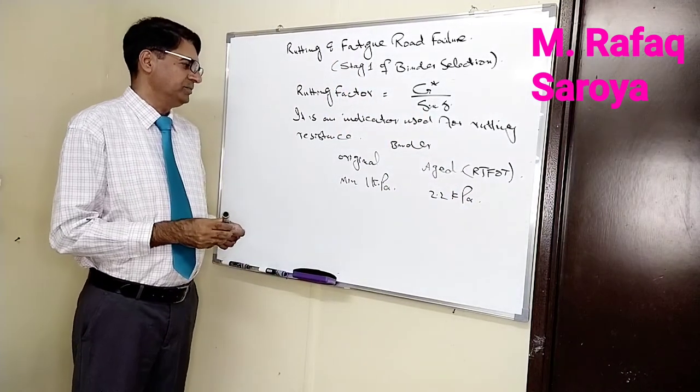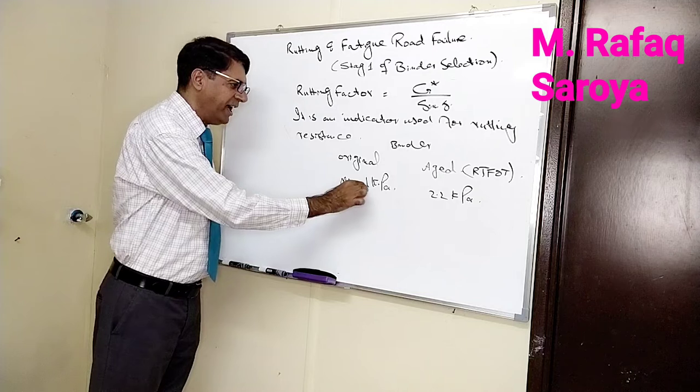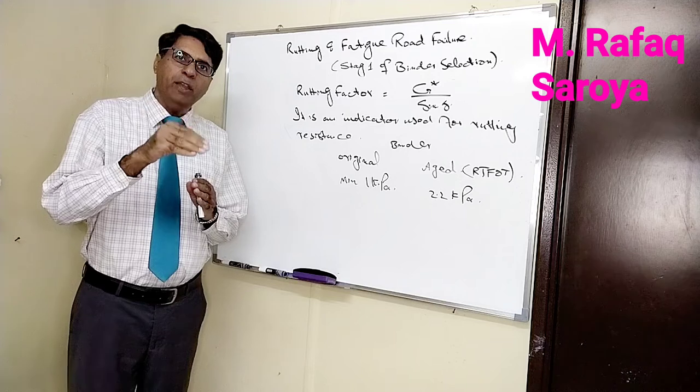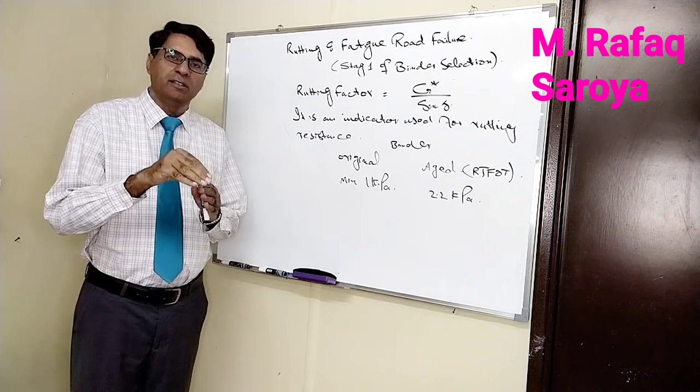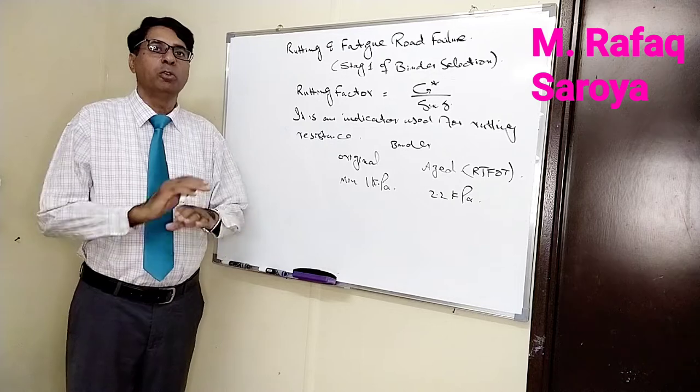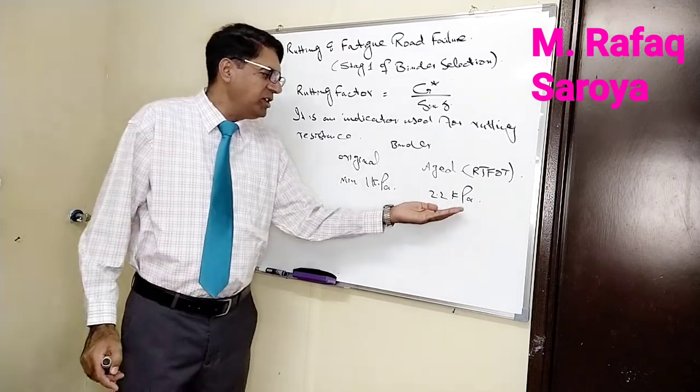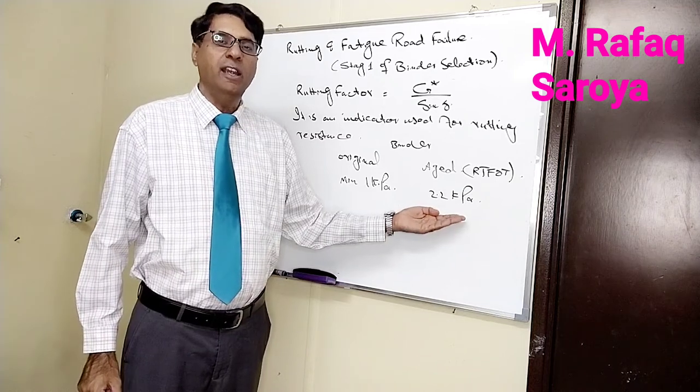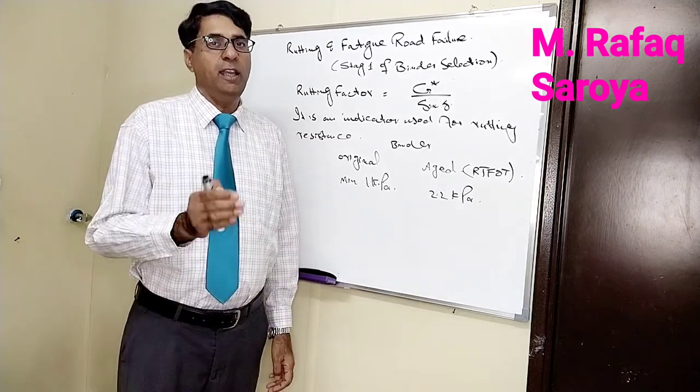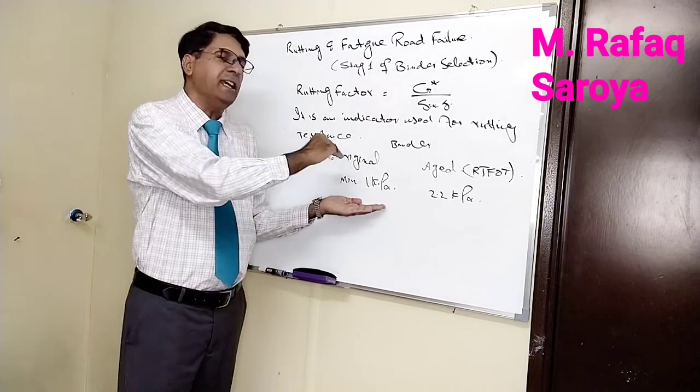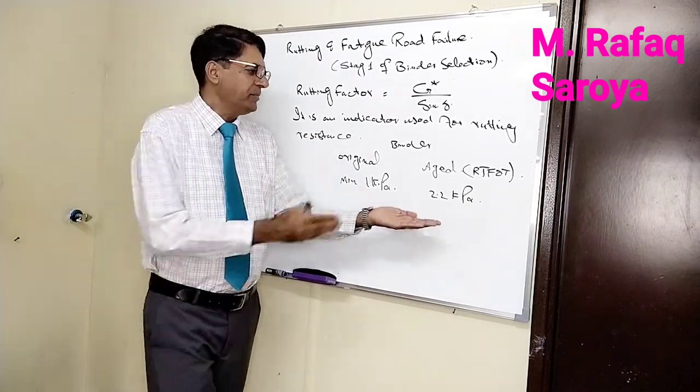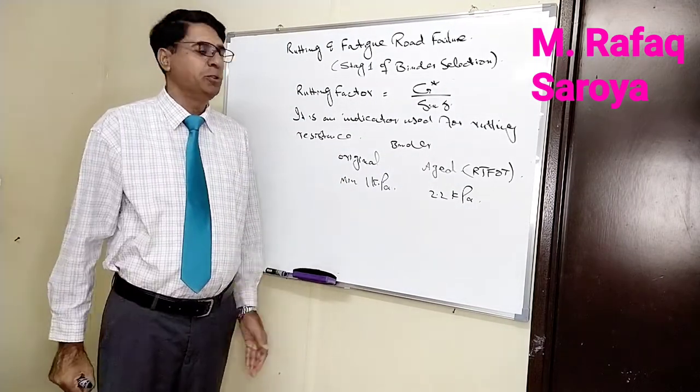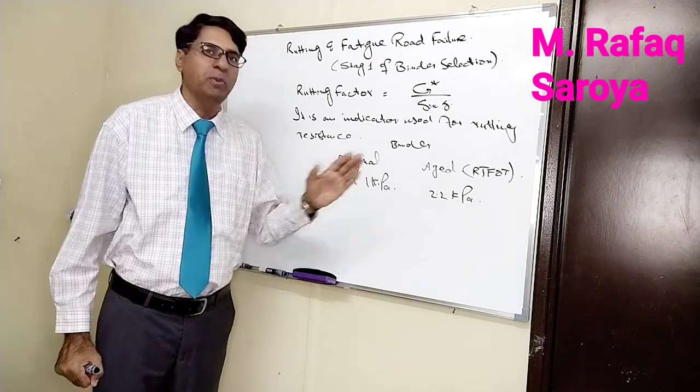If the value is less than this, whatever pavement is made by the material is going to show rutting behavior, meaning the road is going to deform. If the value is less than 1 kPa for original or 2.2 kPa for aged, the road made with this binder will show rutting in the future. If the value exceeds these minimums, rutting will not happen during the defined service time.